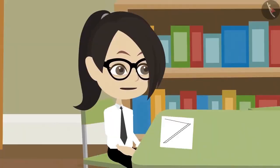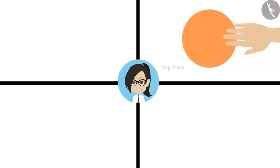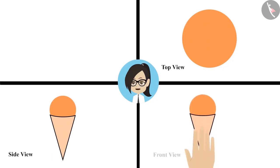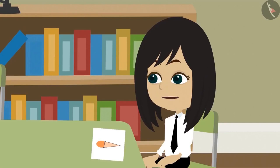I have completed my drawing. Even I am done. Look. First let me see what you have made. Its top view is in the shape of a circle and its side view looks like an ice cream cone with ice cream in it. And its front view is also the same as the side view. This is definitely an ice cream cone. Absolutely right.